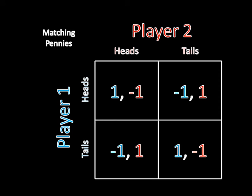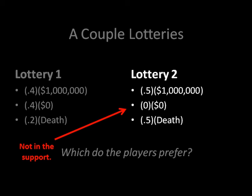Now there are a couple of definitional things I need to give you before we go on to the next video. The first is: what does it mean to be in the support of a lottery? Something in the support of a lottery has positive probability of occurring. So in lottery 2, winning a million dollars is in the support, and dying a painful death is in the support, but winning zero dollars is not in the support of lottery 2 because it occurs with probability zero. Everything in lottery 1 is in the support because each of those things occur with positive probability. Only things that occur with zero probability are considered not in the support.